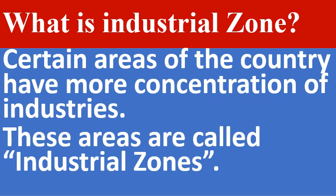What is an industrial zone? Certain areas of the country have more concentration of industries. For example, iron and steel industry, cement industry, paper industry, sugar industry, and many others. All these concentrations of industries are called industrial zones.